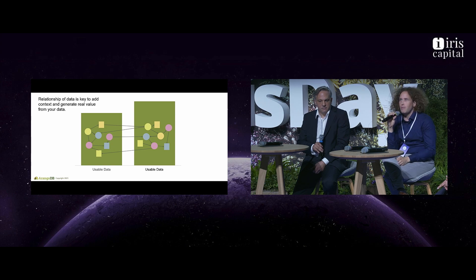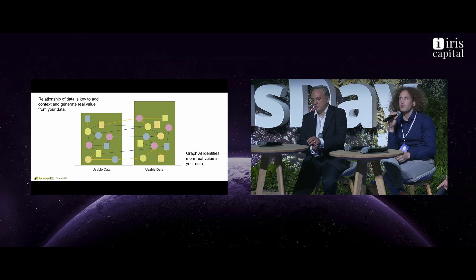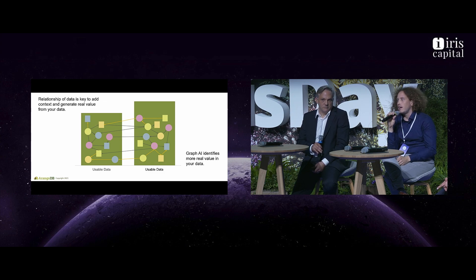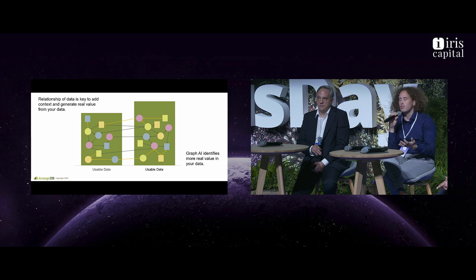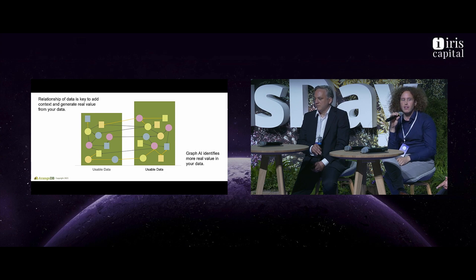The next interesting step, which we are already working on, is graph AI. Right now this is really just taking the data which is there, but if we apply modern machine learning and modern AI technology, we can even predict much more relationships. For example, let's take the supply chain use case again — where are likely to be failures? How can we predict which links might be failing, or which links might be missing in the social network? This is really where we can get a lot of value out of that.